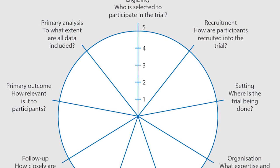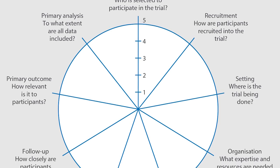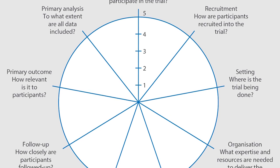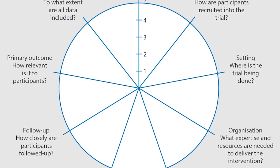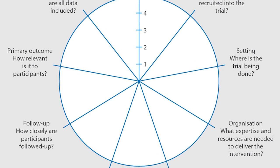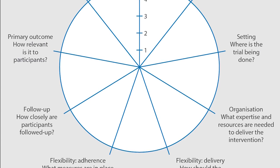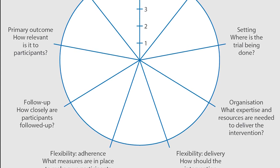We recognise there's a continuum. PRACI-2 has a simple wheel format. The wheel has nine spokes, and we call each of these spokes a domain. The idea is that each of these domains helps trialists differentiate between an explanatory approach to designing a trial and a pragmatic approach.